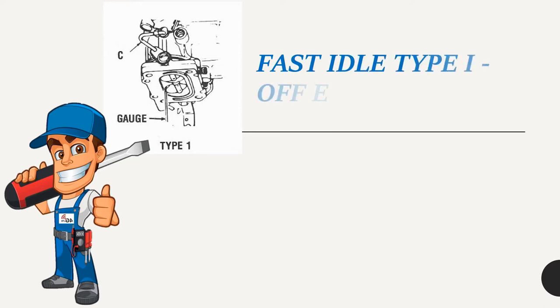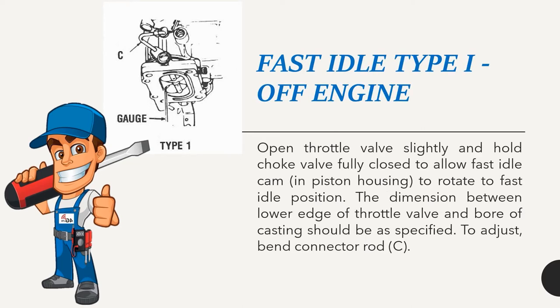Fast idle type 1 — off engine: Open throttle valve slightly and hold choke valve fully closed to allow fast idle cam in piston housing to rotate to fast idle position. The dimension between lower edge of throttle valve and bore of casting should be as specified. To adjust, bend connector rod C.